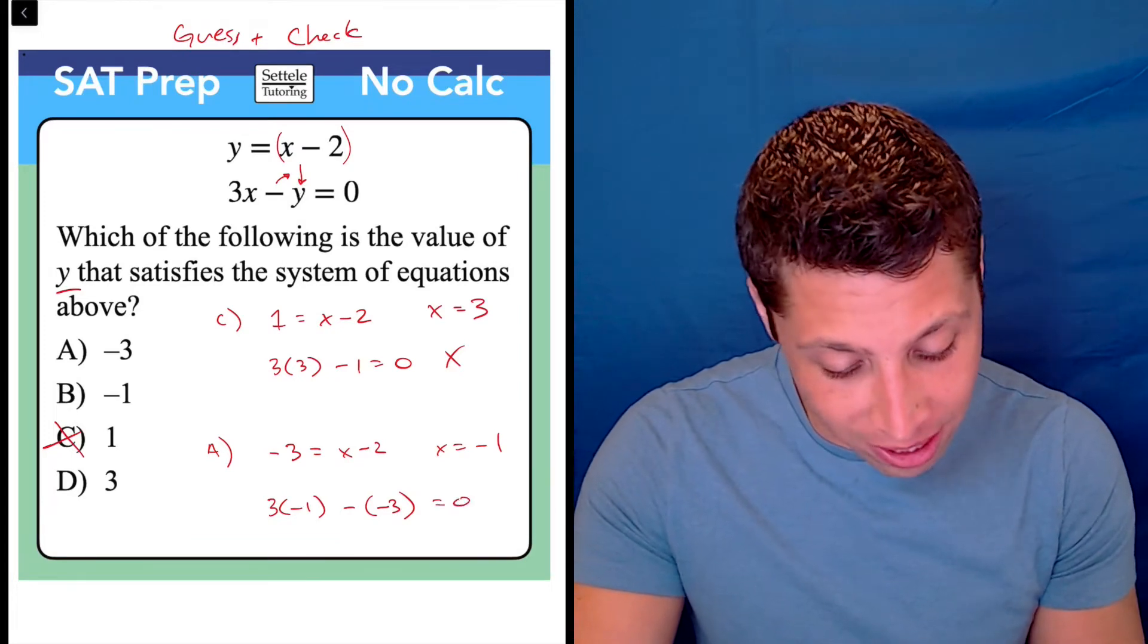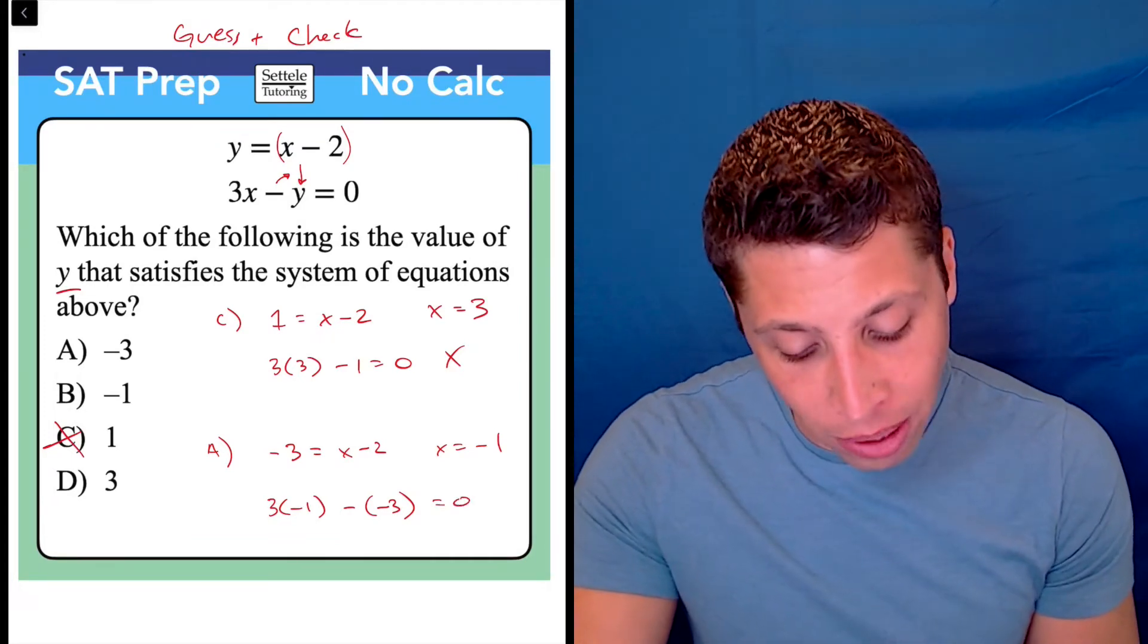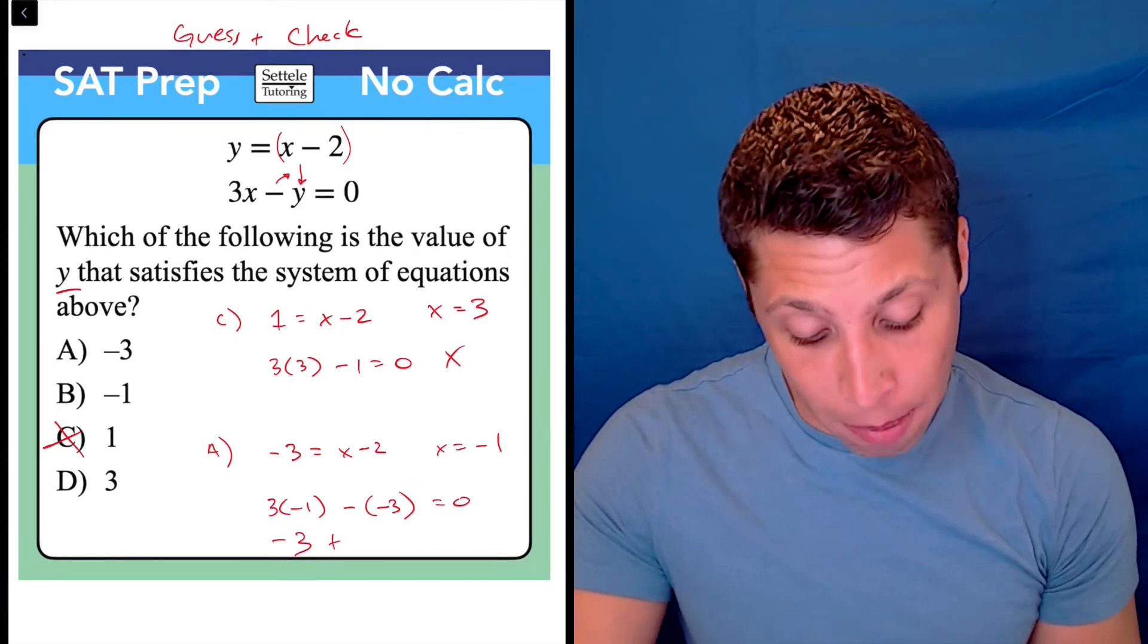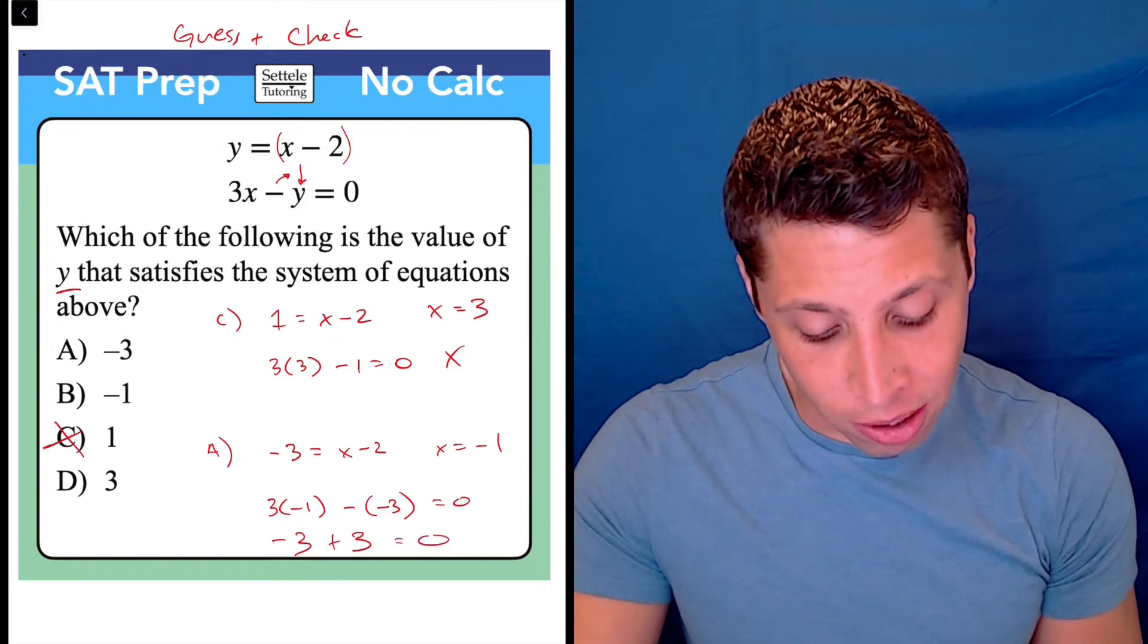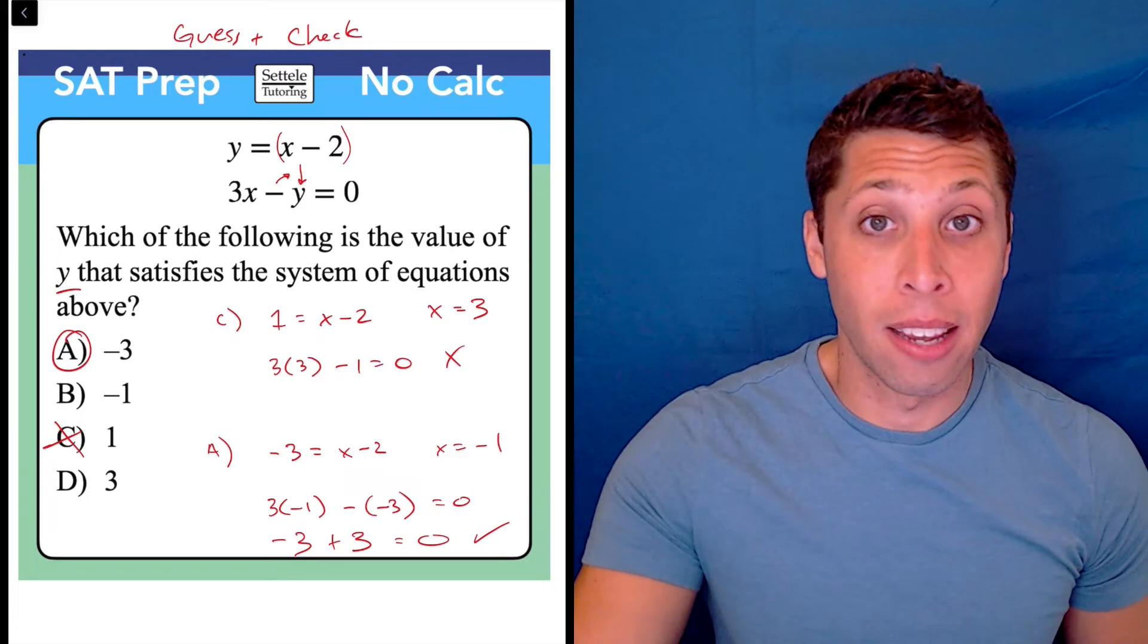Notice, it's not a coincidence that they're showing up here. They would have showed up as well if we had done the algebra. But 3 times negative 1 is negative 3, and then minus negative 3 is the same as plus 3. And so there you go. Negative 3 plus 3 is 0. So we've proven that choice A is our value of y.